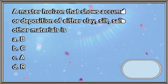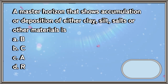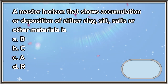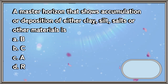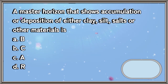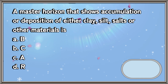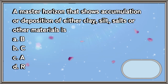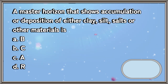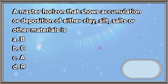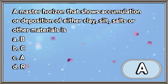A master horizon that shows accumulation or deposition of either clay, silt, salts, or other materials is: A. B Horizon. B. C Horizon. C. A Horizon. D. R Horizon. The answer is letter A.